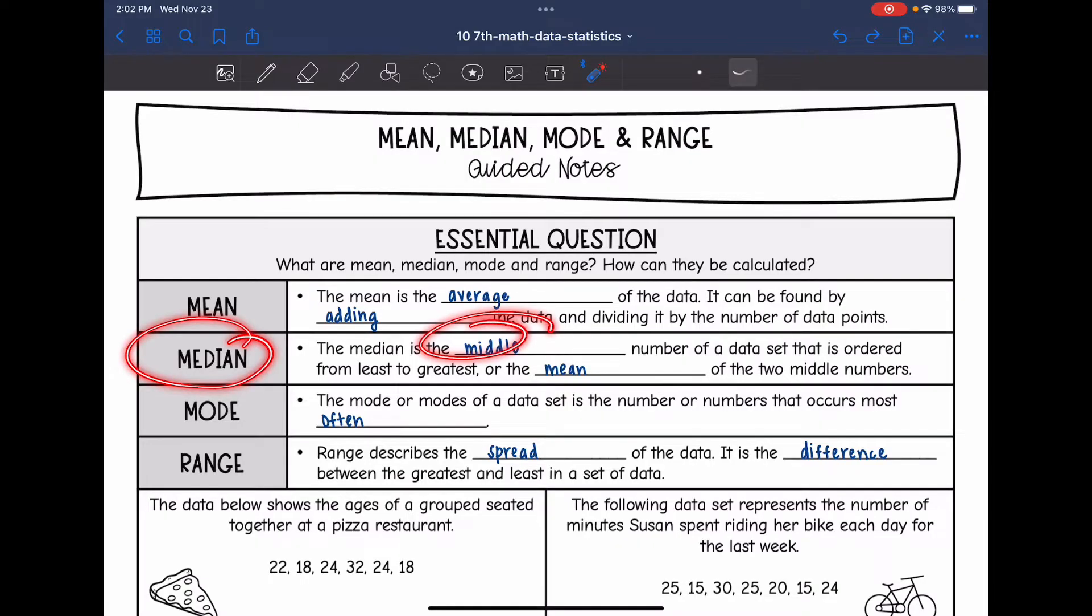Median is the middle number of the data set that is ordered from least to greatest. Or you could think of it as the mean between the two middle numbers. So if there's not just one number in the middle and there's two of them, we will find the mean of those two numbers.